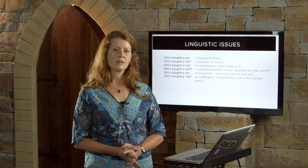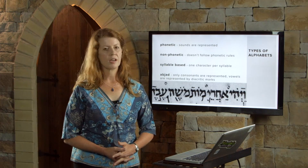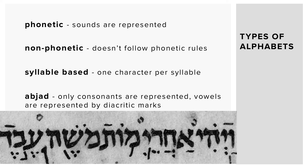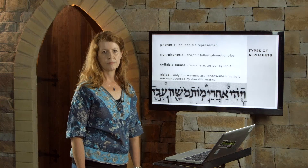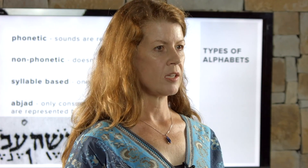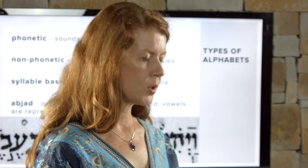Another major decision is what type of alphabet to use. An alphabet can be a phonetic alphabet where sounds are represented, a non-phonetic alphabet like English, a syllable-based alphabet where there is only one character per syllable — Tibetan is that kind of alphabet — or an abjad, which is a consonant-only alphabet where all the vowels are represented by diacritic marks. Hebrew, as you can see here, is an example of an abjad. The decision about what type of writing system to use will probably also be influenced by sociolinguistic and practical issues.